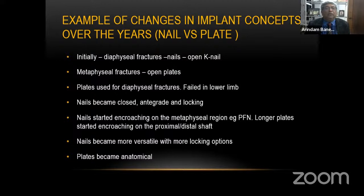Let's look at nails and plates. The open K-nail was the first thing used for diaphyseal fractures, and metaphyseal fractures were often treated by open plates. But gradually, plates started being used for diaphyseal fractures, mainly in the arm and forearm, but they failed in the lower limb. The nails, which were open, became closed. Antegrade took over from retrograde, and the locking mechanism started. Then nails started encroaching on the metaphyseal bone — the PFN was an example. And longer plates started encroaching on the proximal and distal shaft.